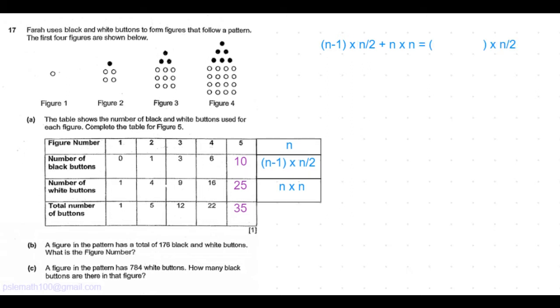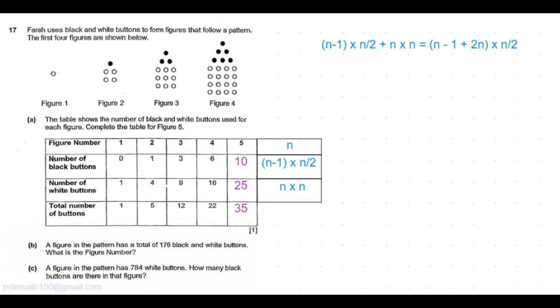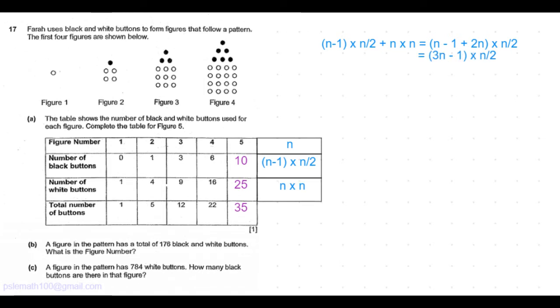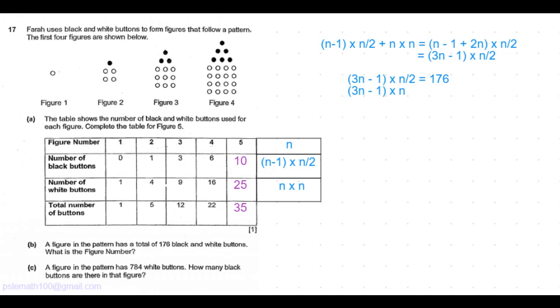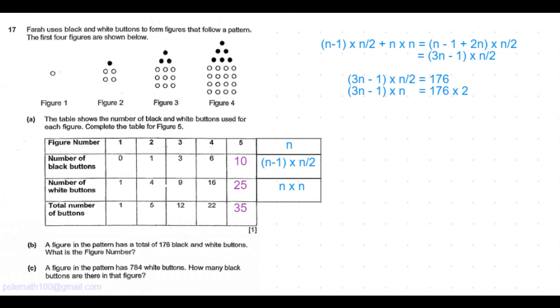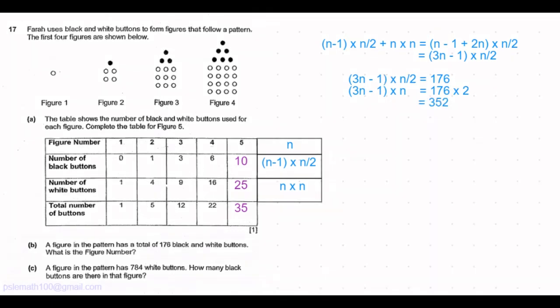We take out the common factor n divided by 2. So the remaining is n minus 1 plus 2 times n. That adds up to 3 times n minus 1 times n by 2. So now this we can equate to 176, which means 3 times n minus 1 times n should be 176 times 2, which equals 352. The mathematical method to solve this is beyond P6 level. So let's do by simple guess and check.